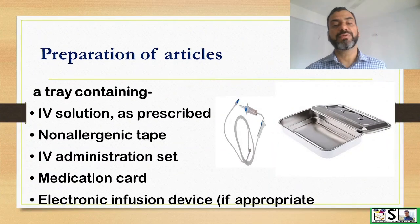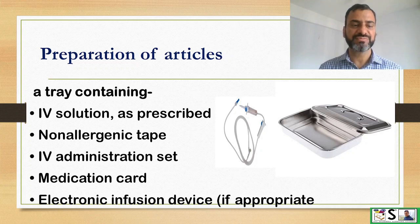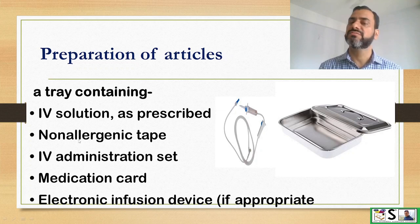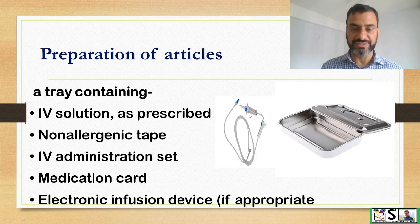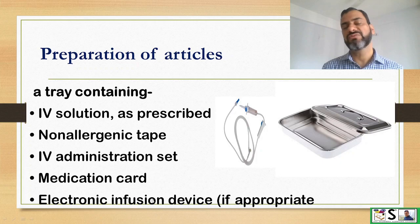Now we come to the preparation of articles needed for this procedure. A tray contains IV solutions as prescribed by the physician, non-allergic tape to fix the cannula, an IV administration set — also known as IV drip set — a medication card for the patient, and an electronic infusion pump if we are using one.